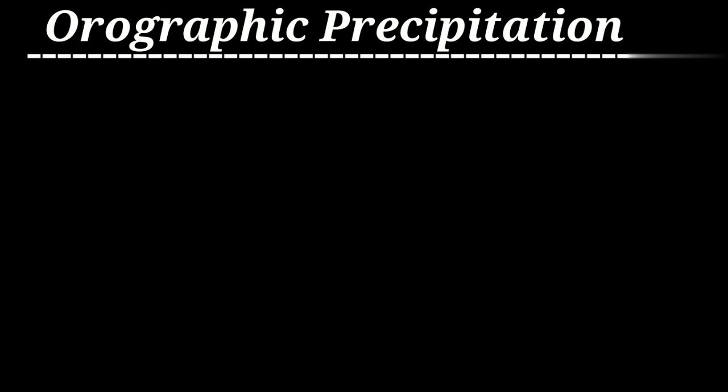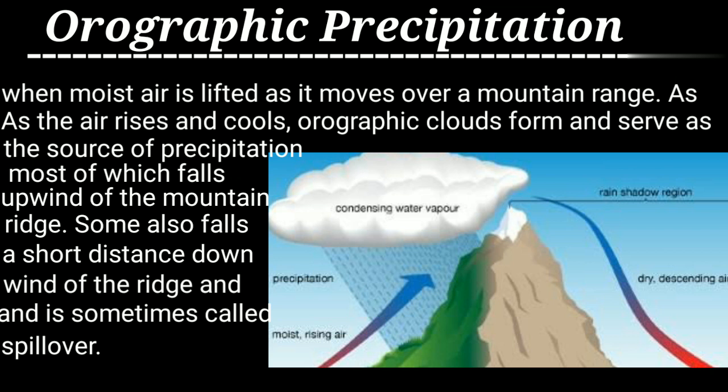Orographic precipitation is very simple. An air mass moves horizontally, but if there are natural topographical barriers like mountains, the air mass hits the barrier and is forced to go up. When it rises, it condenses and rain falls down. This mainly occurs in coastal regions.